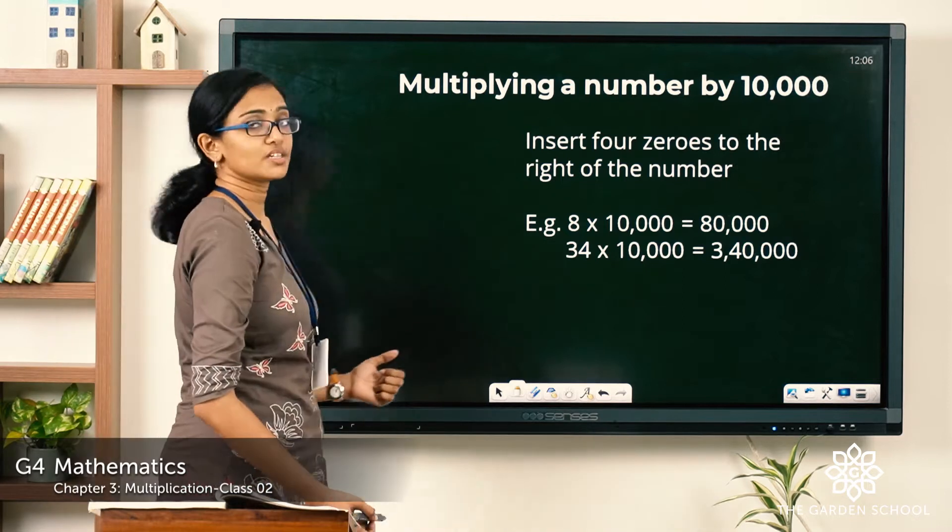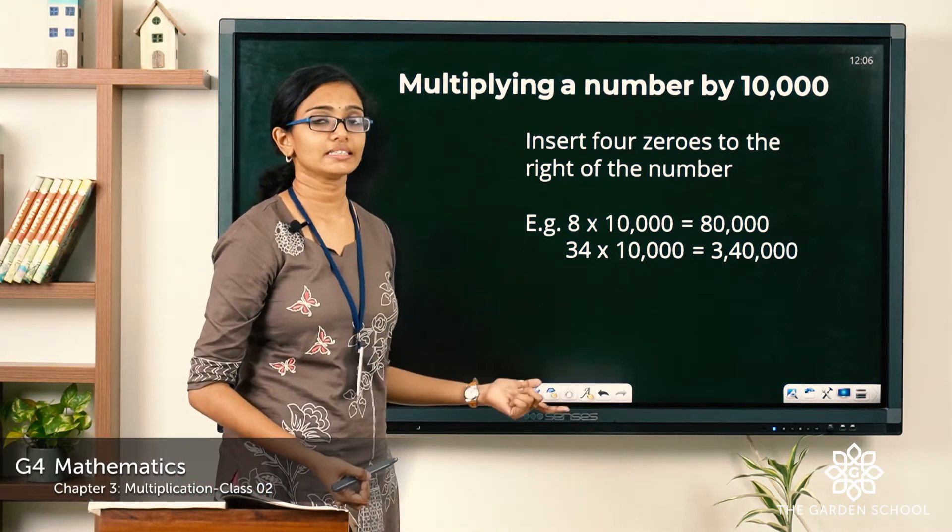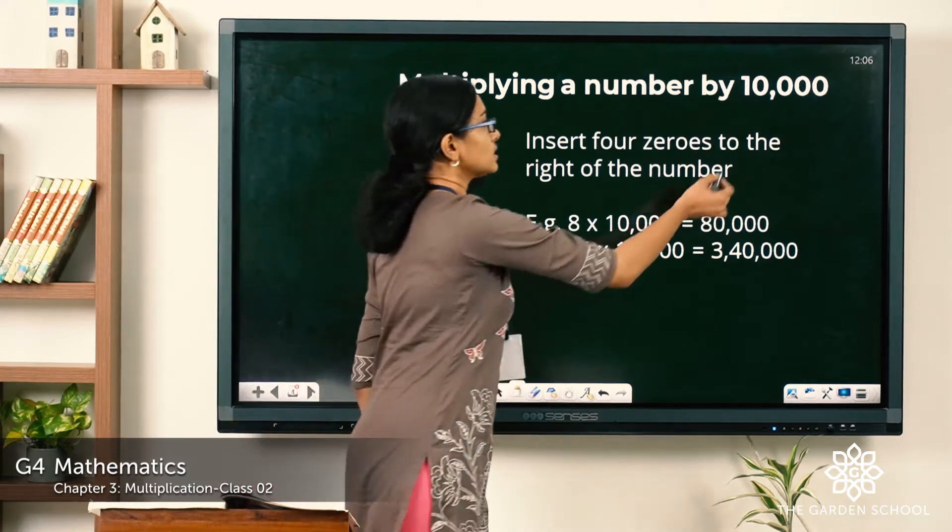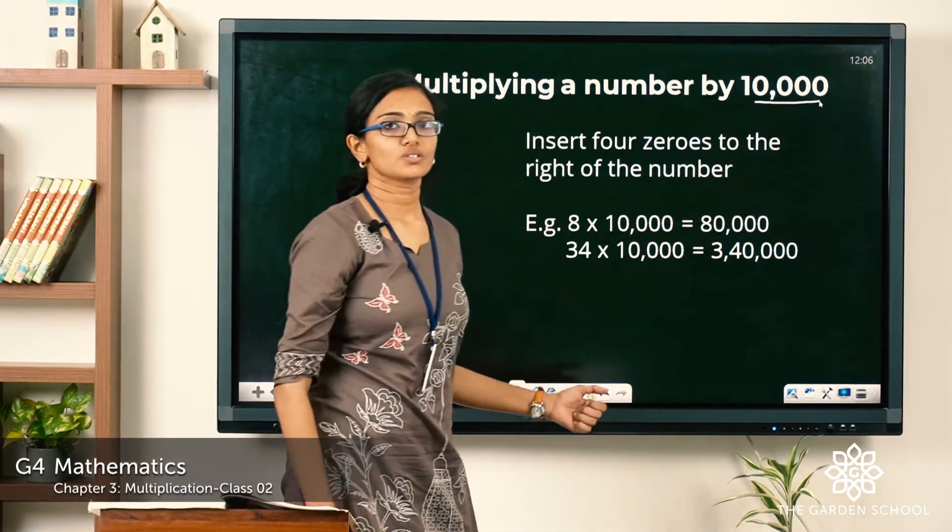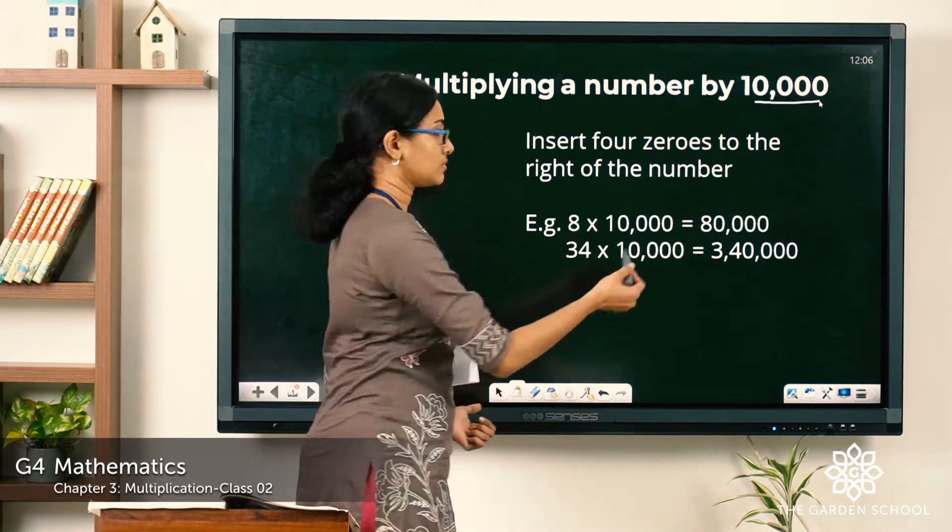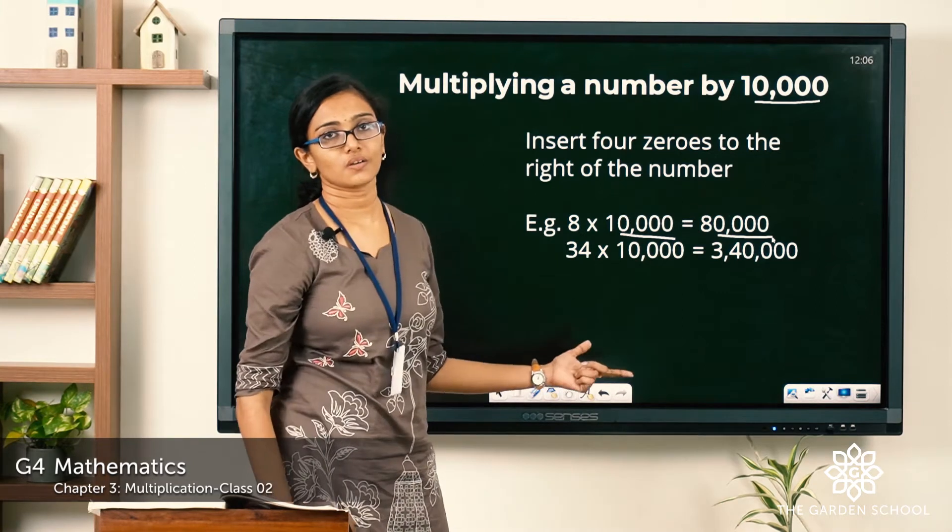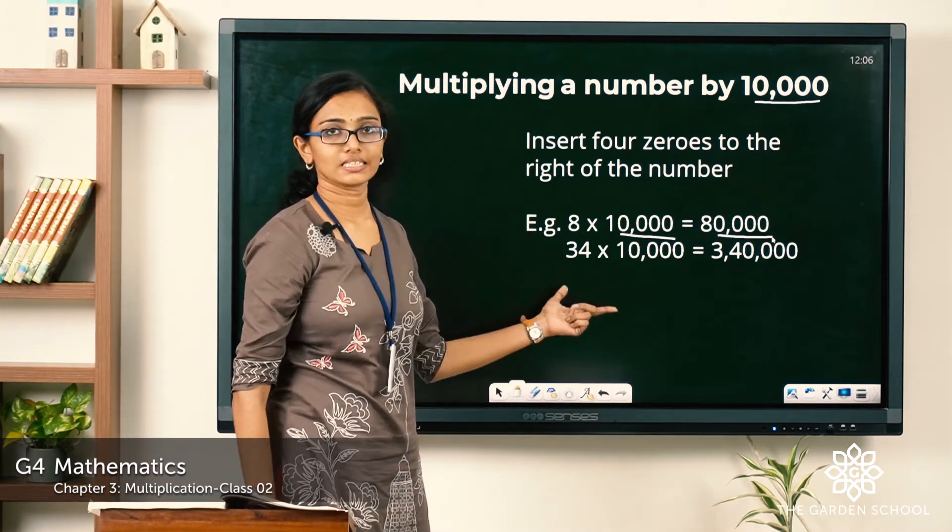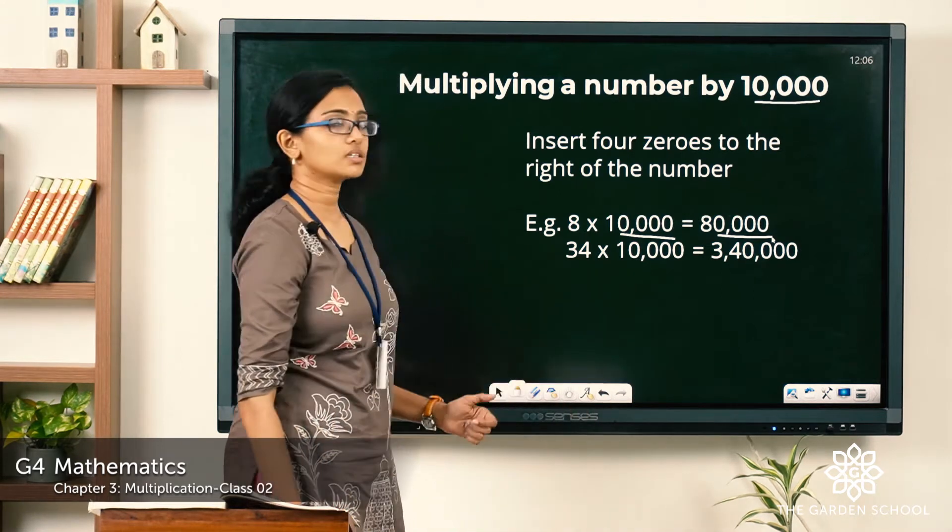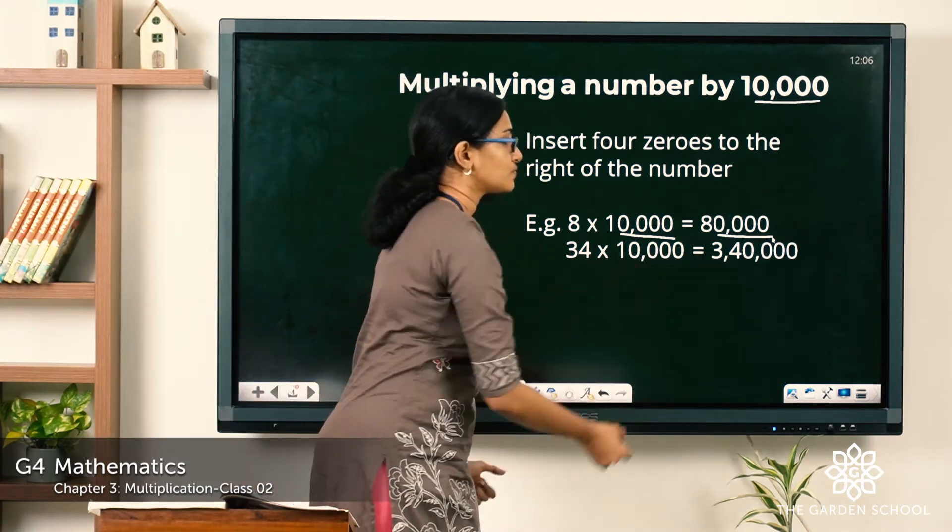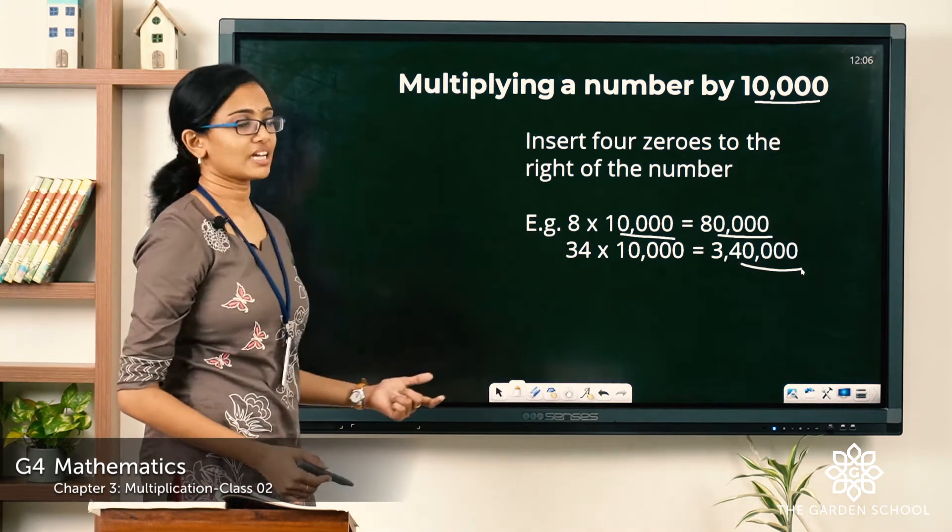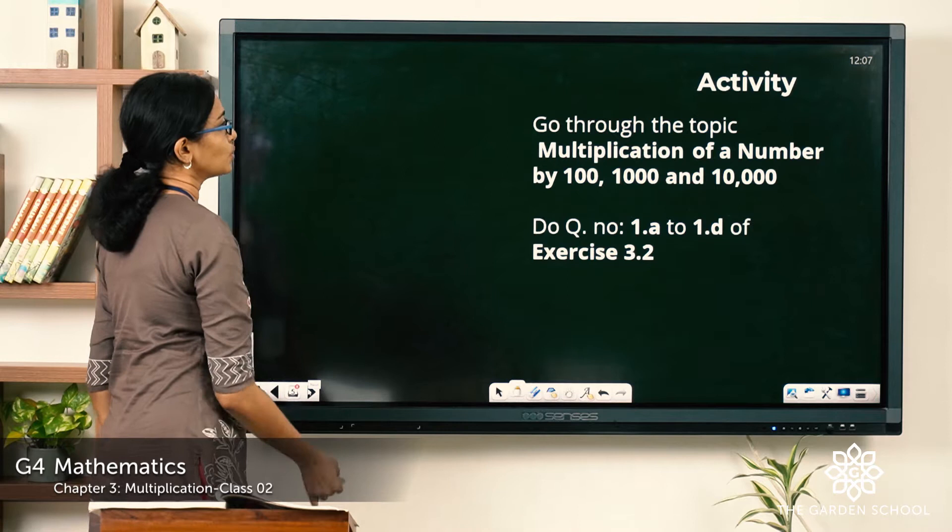Similar to multiplication by 100 and 1000, to multiply with 10,000, just insert these four zeros to the right of the given number. So 8 into 10,000 means you just insert these four zeros to the right of 8 giving you 80,000. In the second example, 34 into 10,000 is 3,40,000 after inserting the four zeros to the right of 34. I hope this is clear to you.